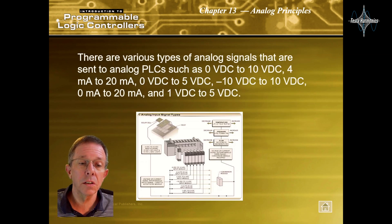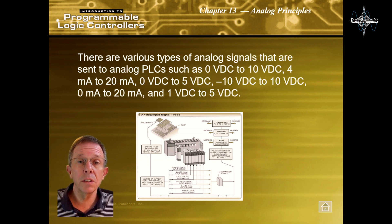There are various types of analog signals that are sent to analog PLCs such as 0V DC to 10V DC, 4mA to 20mA, 0V DC to 5V DC, negative 10V DC to 10V DC, 0mA to 20mA, and 1V DC to 5V DC.